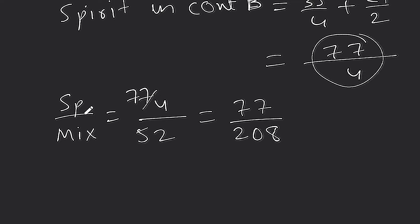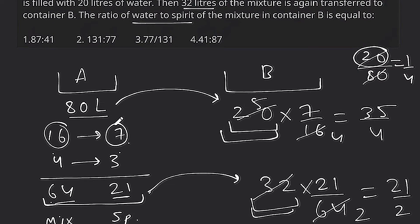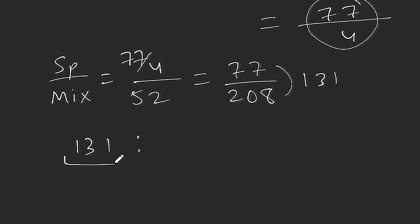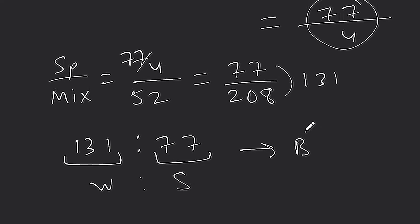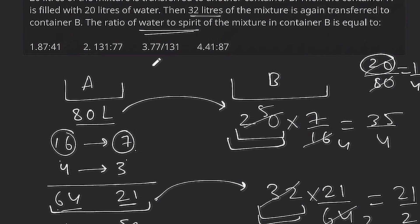Now the question asks for water to spirit ratio. Spirit in B is 77 out of 208 total mixture. So water is 208 minus 77 equals 131. Therefore water is 131 and spirit is 77. The ratio of water to spirit in container B is 131 to 77.